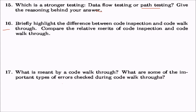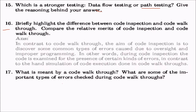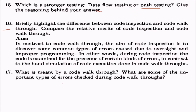Briefly highlight the difference between code inspection and code walkthrough. In code inspection, the code is examined for the presence of certain kinds of errors — those caused by oversight or improper programming. In code walkthrough, a hand simulation of code execution is performed — not actual system execution, but manual tracing.